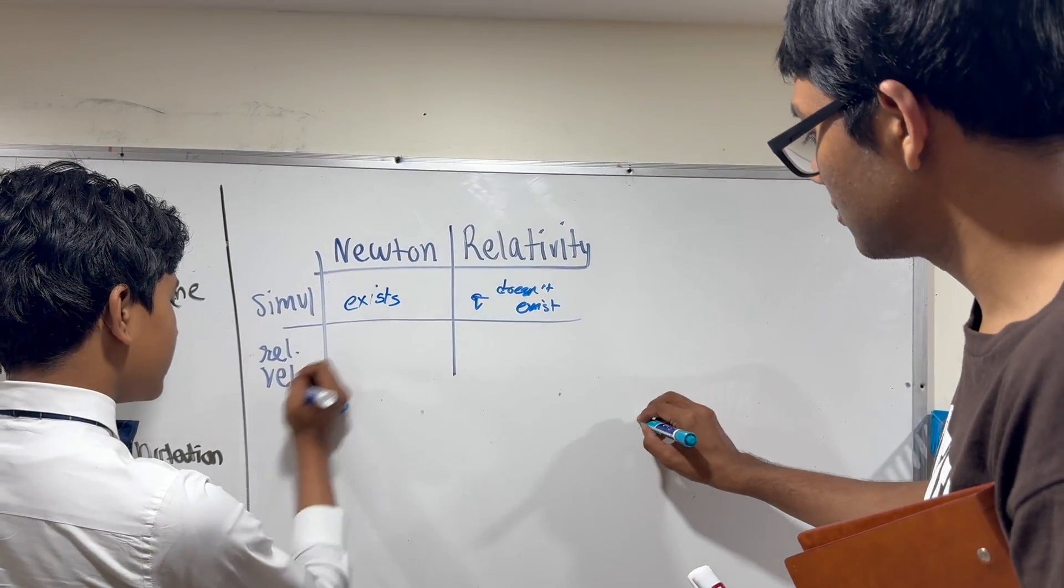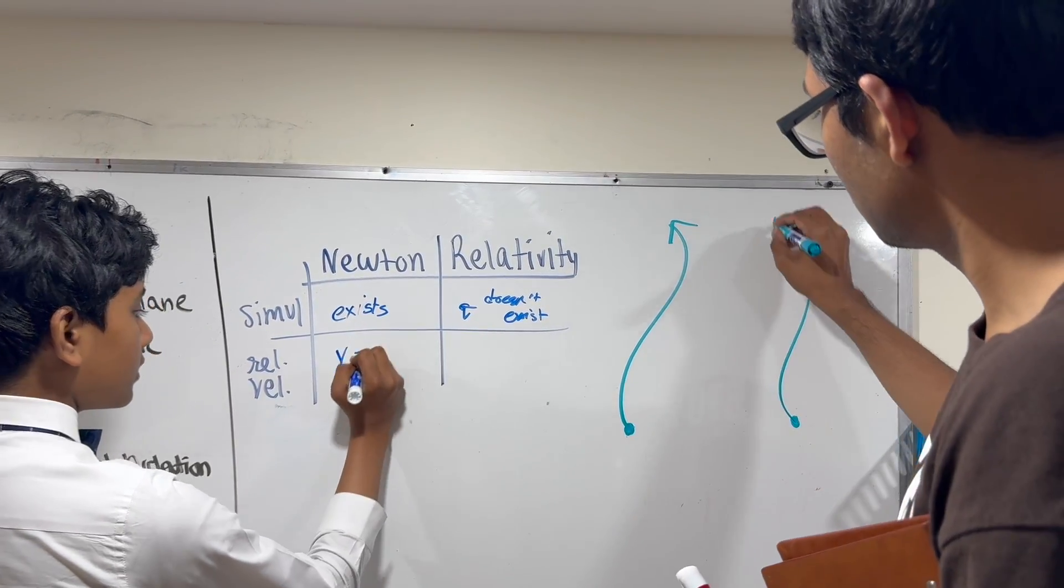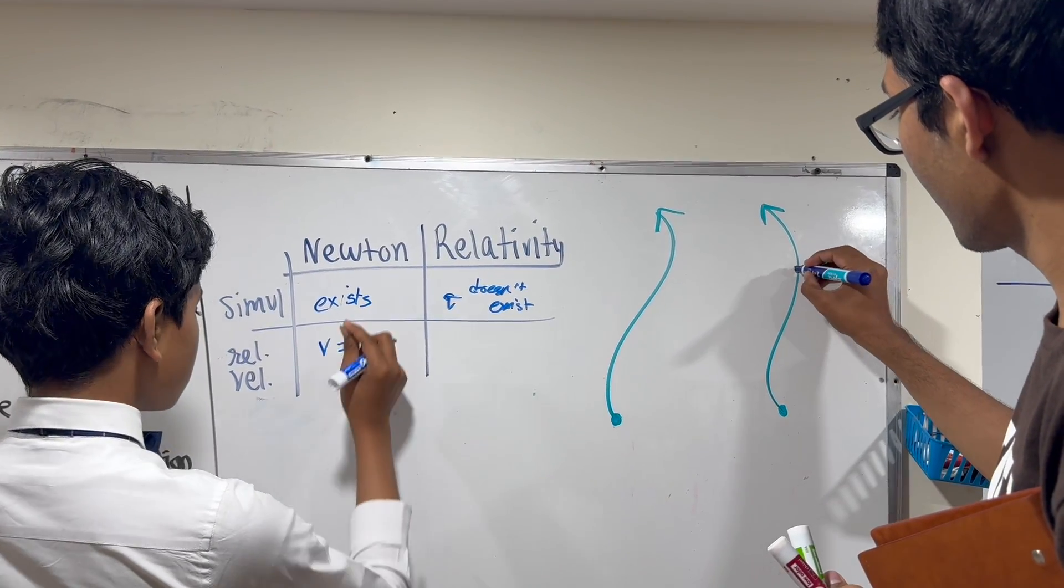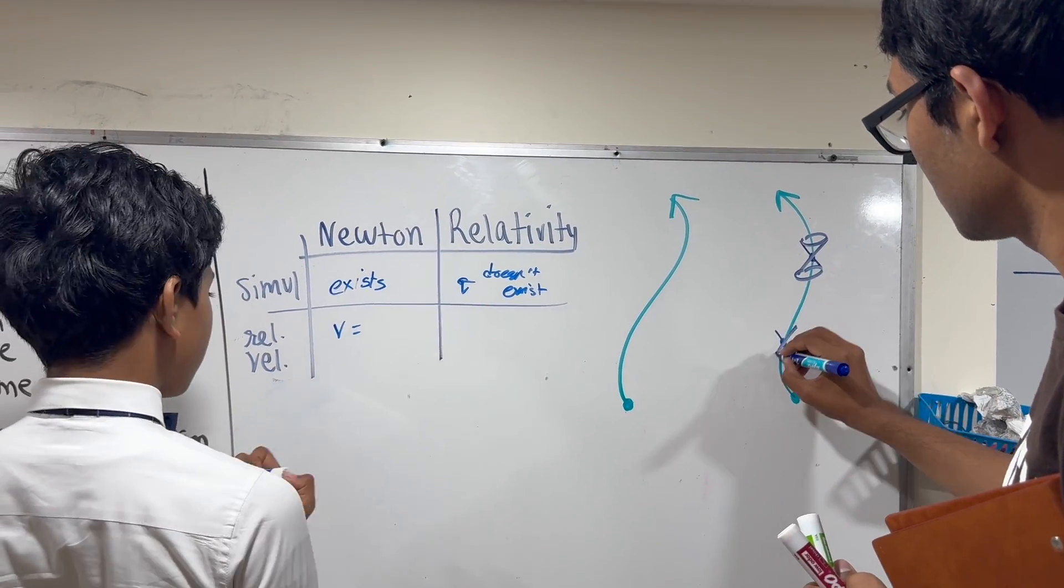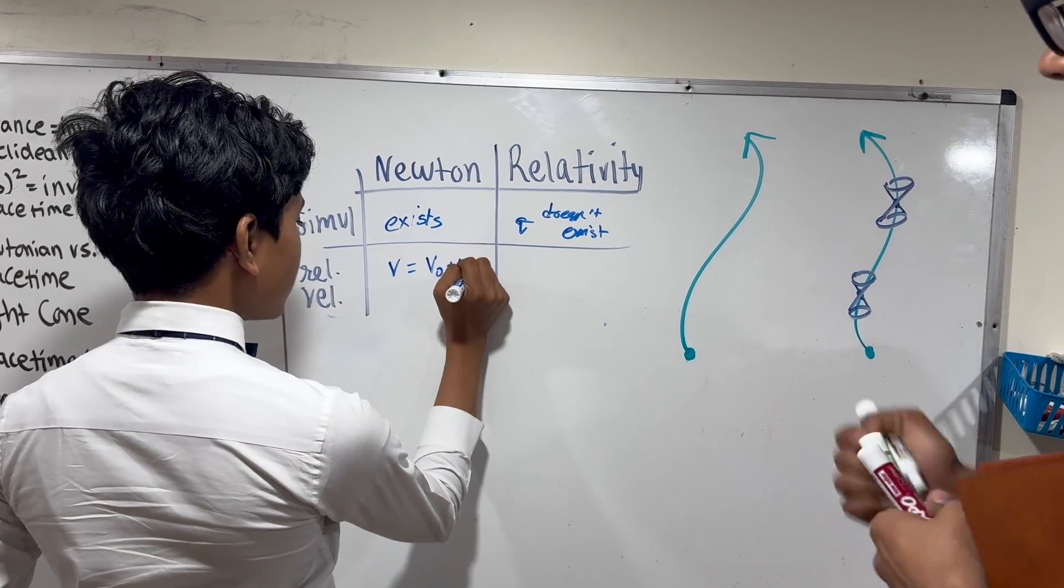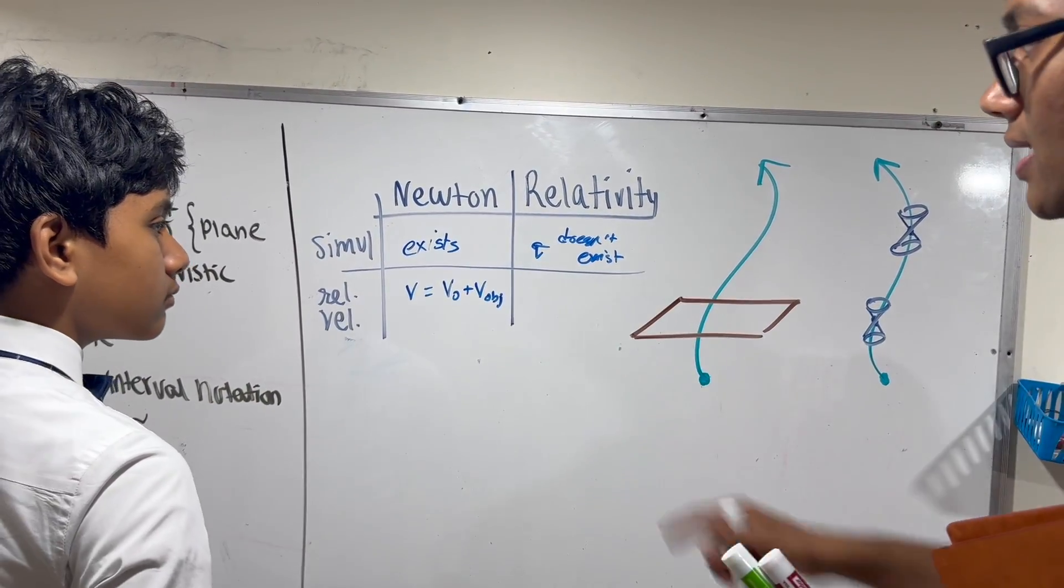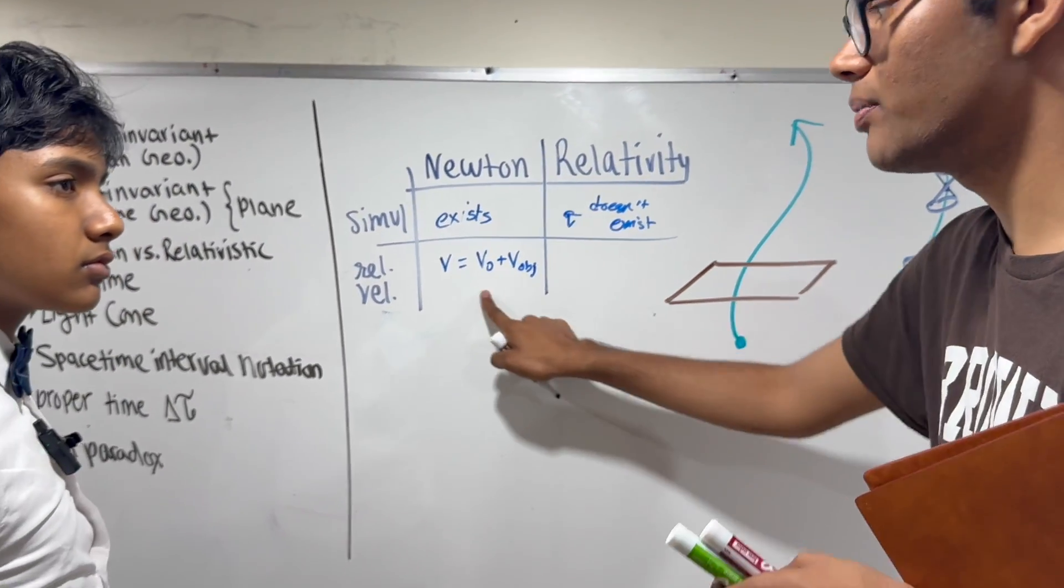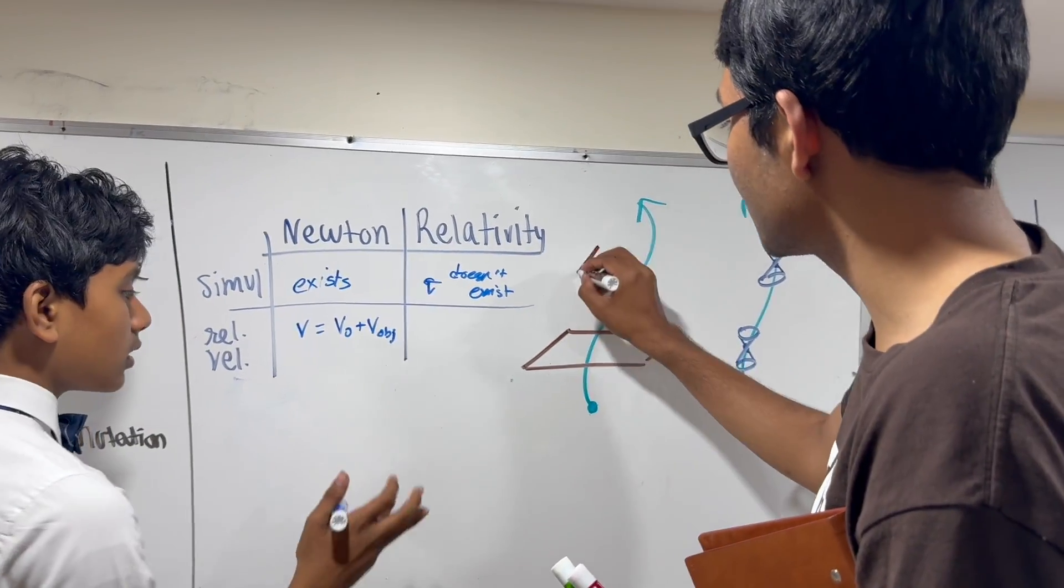Well, relative velocity, we can always figure out that the velocity with respect to the Earth equals the velocity of the observer plus the velocity of the object. That's how you add velocities in Newtonian space-time. Can you have any relative velocity between two particles in Newtonian space-time? Anything? Yeah. What about in relativistic space-time?